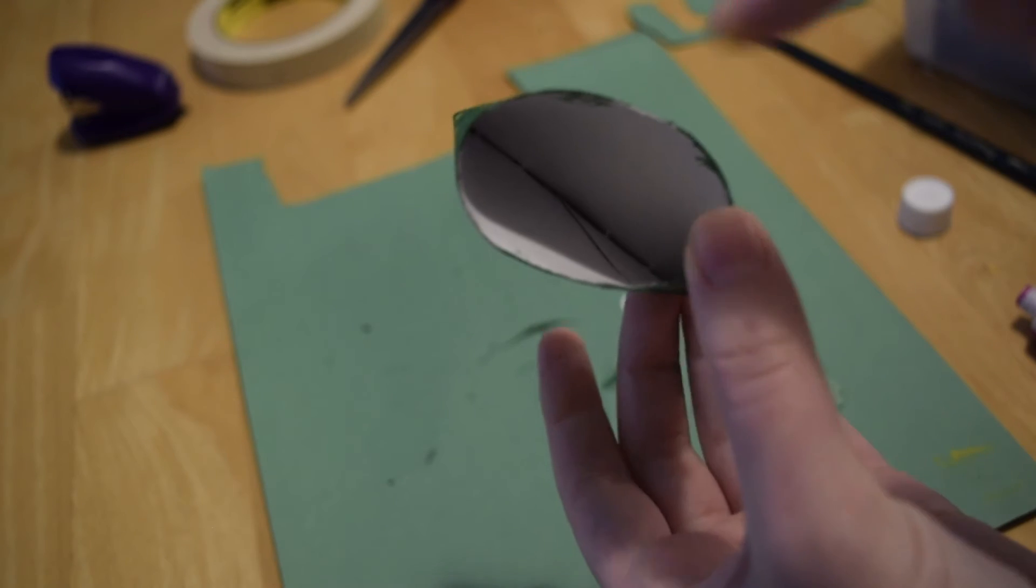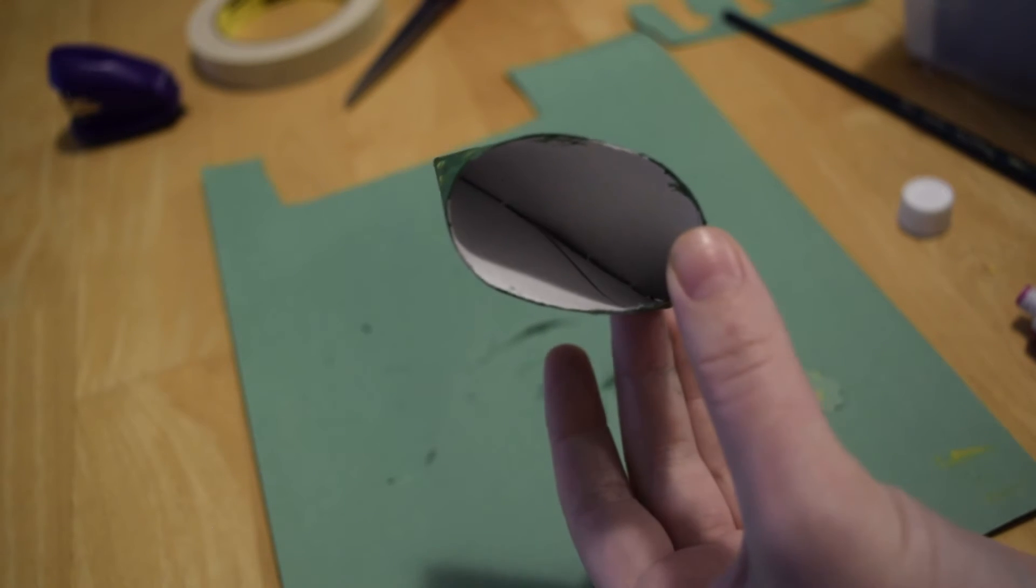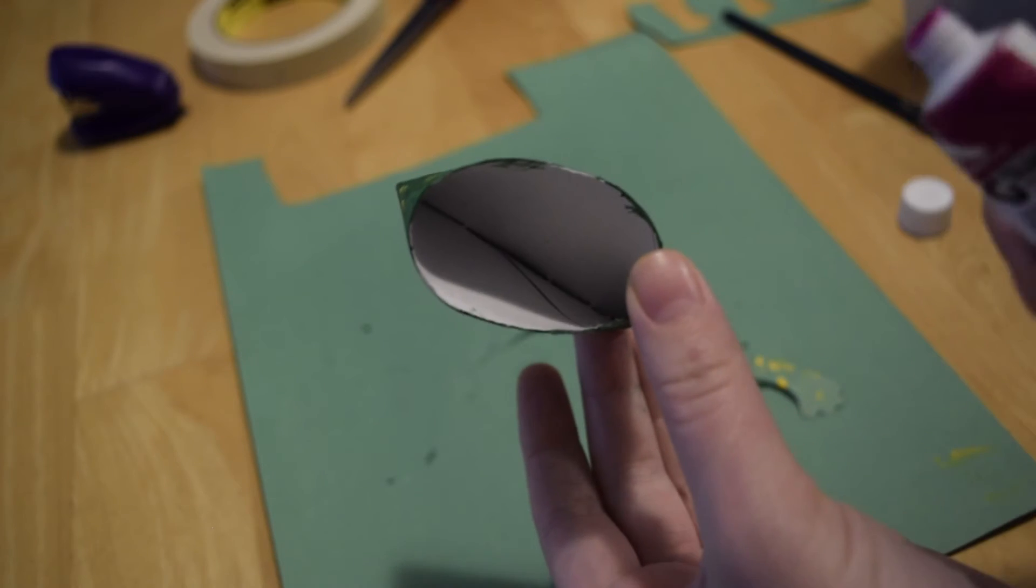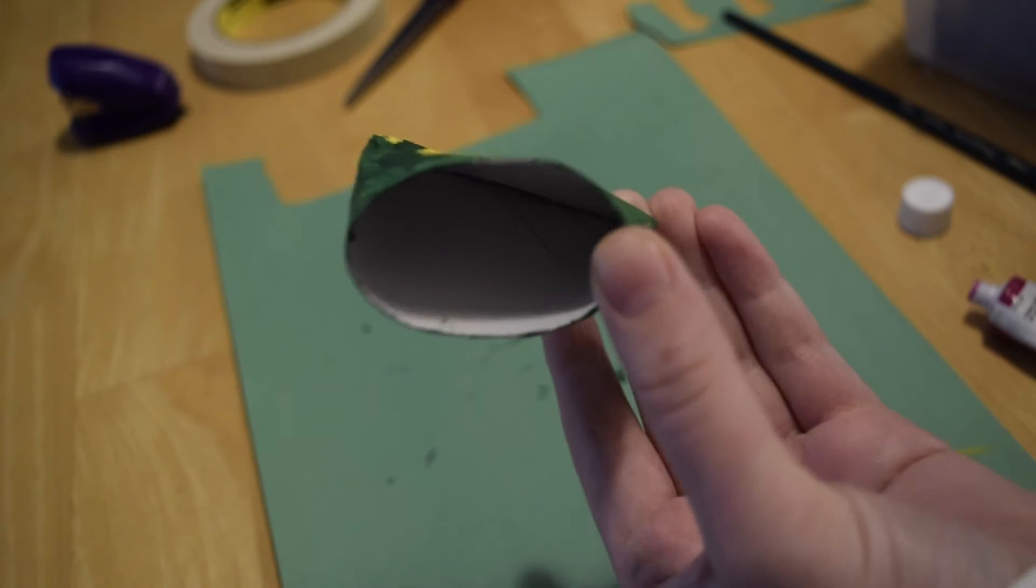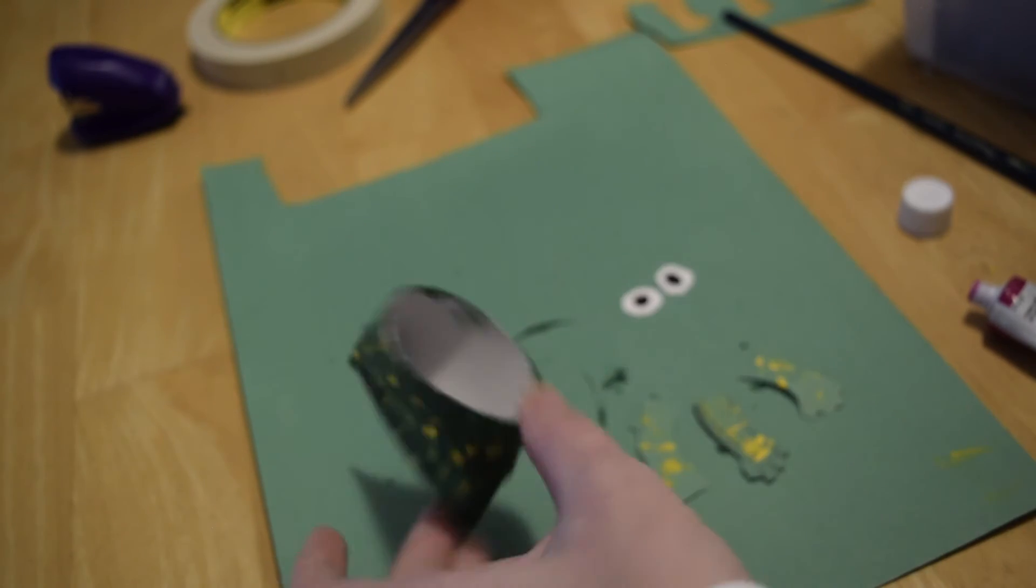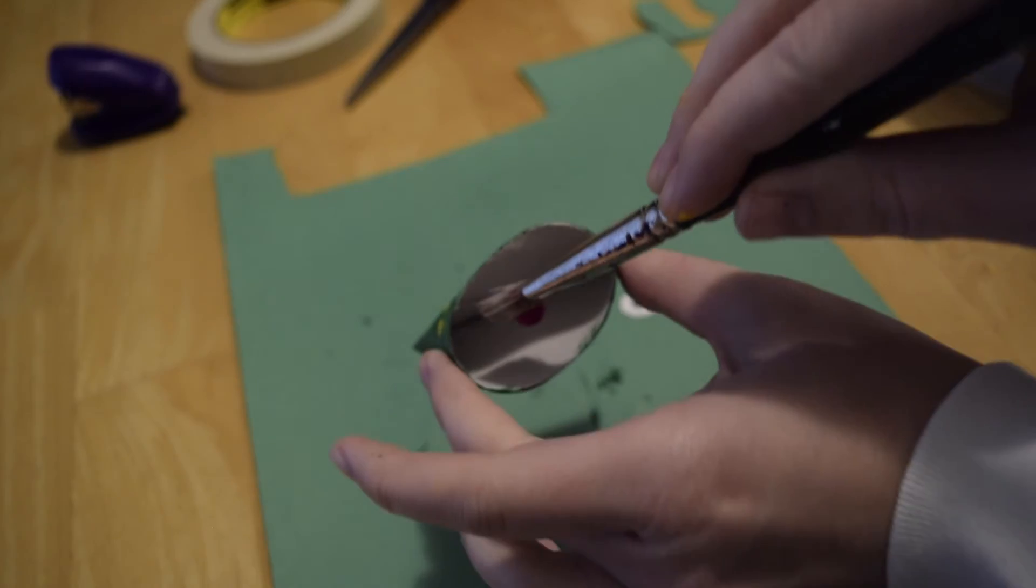And for one extra detail, and you don't have to do this if you don't want to, I'm going to take a little bit of dark pink or you can use red and paint the inside of the toilet paper tube for the inside of the frog's mouth. Use my big paintbrush for this one.